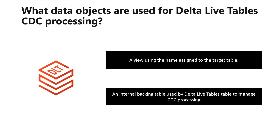This internal table is named by prepending 'apply_change_storage' to the target table name. For example, if you declare a target table named DLT_CDC_target, you will see a view named DLT_CDC_target and a table named apply_change_storage_DLT_CDC_target in the Metastore environment. Creating a view allows Delta Live table to filter out extra information — such as older versions — that is required to handle out-of-order data. To view the processed data, query the target view. You can also query the raw data in the apply_change_storage table to see deleted records and extra version columns.